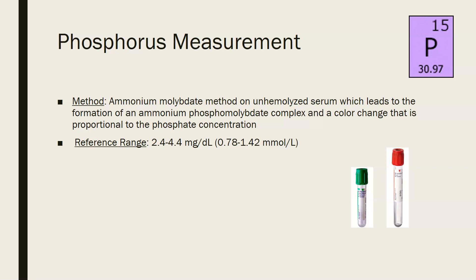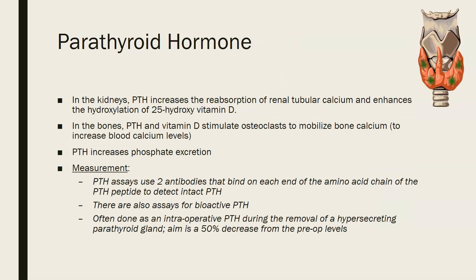The method to measure phosphorus is the ammonium molybdate method, using unhemolyzed serum, which leads to the formation of an ammonium phosphomolybdate complex and a color change proportional to the phosphate concentration. The reference range for phosphorus is 2.4–4.4 mg/dL or 0.78–1.42 mmol/L. Always refer to the ranges on your lab report. The specimen is lithium heparin plasma or serum.